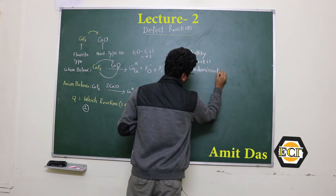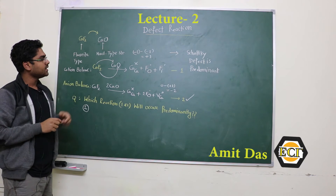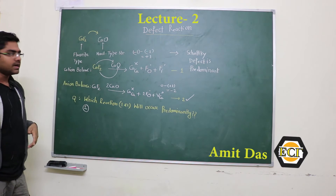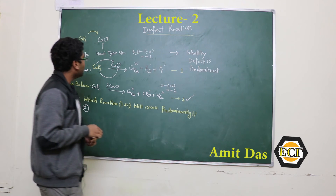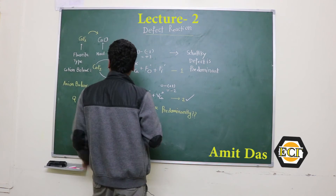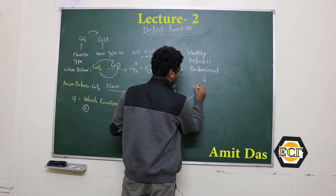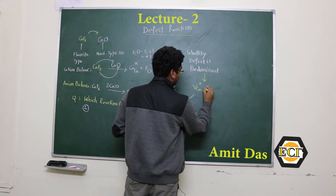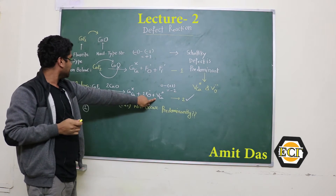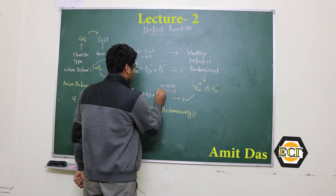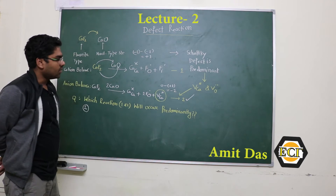You can take it as homework: why is the Schottky defect predominant in an NaCl structure? We will discuss this in the next class. For now, let us assume that the Schottky defect predominantly exists in the NaCl structure, meaning there is a vacancy of the cation (calcium) and a vacancy of oxygen. In Reaction 2 we see that a cation vacancy exists, which is why the second reaction occurs predominantly.